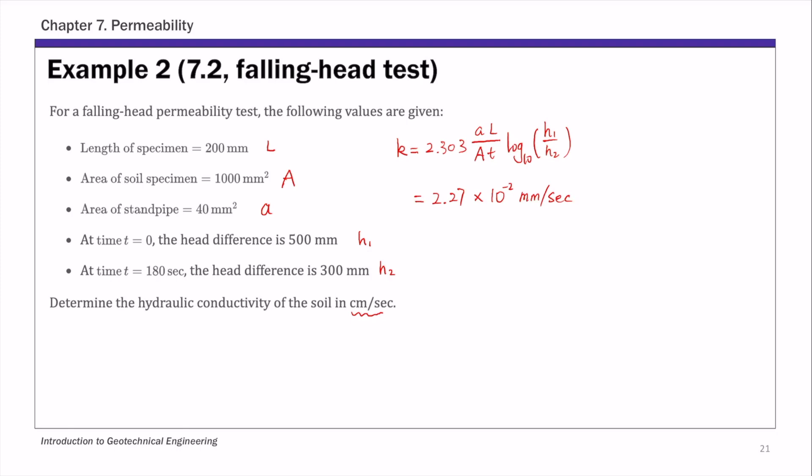So once we have this final result, we need to convert this to centimeter per second. From millimeter to centimeter, we divide by 10. So we get 2.27 times 10 to the negative 3 centimeter per second.